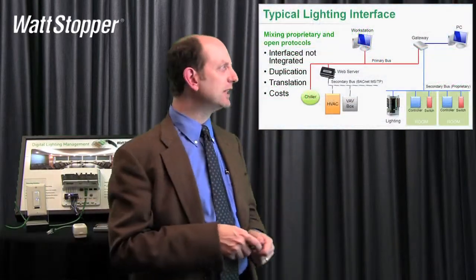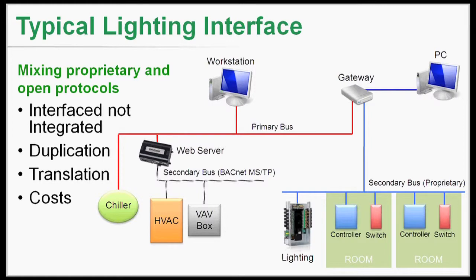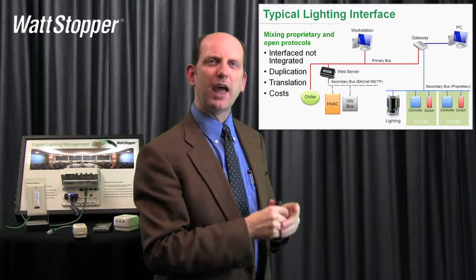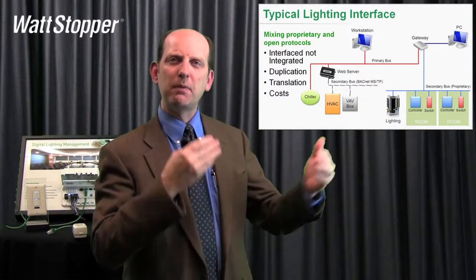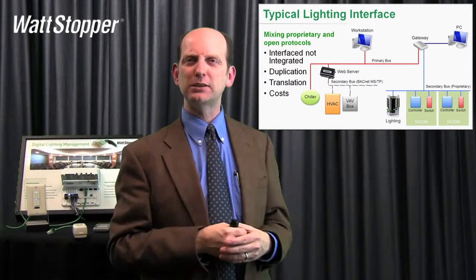Here we see a screen, and what we've got is what we refer to as the typical lighting interface. This is what's gone on before, and this is when somebody says they want an integrated building. One of the toughest words to really understand is 'integrated' — everybody might have their own vision of it. In this case, somebody said they wanted an integrated building, and what they wound up with was a workstation talking to a bunch of HVAC controls, and then a completely separate lighting control, and there's one box they call a gateway basically acting as a communication bus between those two.